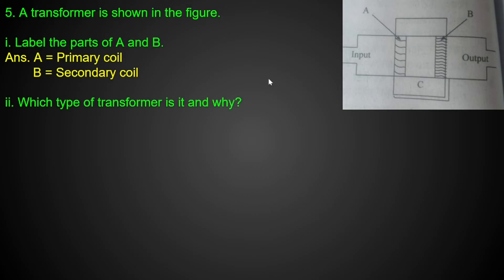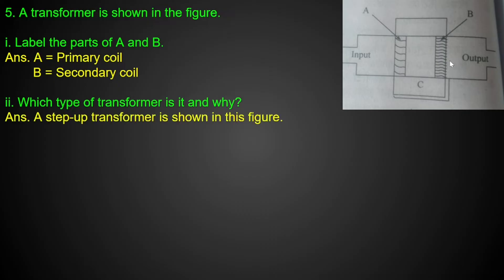Which type of transformer is it and why? In this transformer, the primary coil has fewer turns than the secondary coil. Therefore this is a step-up transformer, because the secondary voltage is greater than the primary voltage.